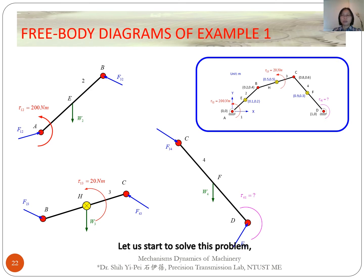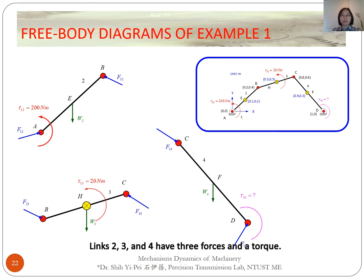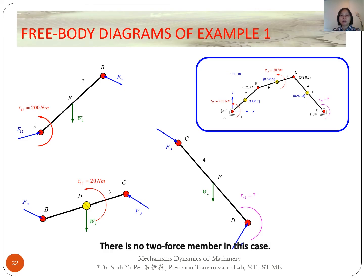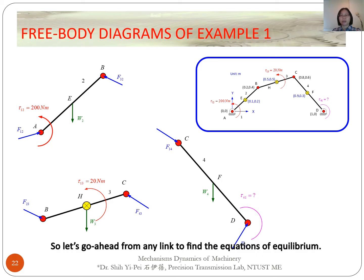Let's start to solve this problem. You need to identify two-force members first. Links 2, 3, and 4 each have three forces and a torque acting on them, so they are not two-force members. There is no two-force member in this case. Unfortunately, we cannot simplify the calculation, so let's go ahead and find the equations of equilibrium for each link.